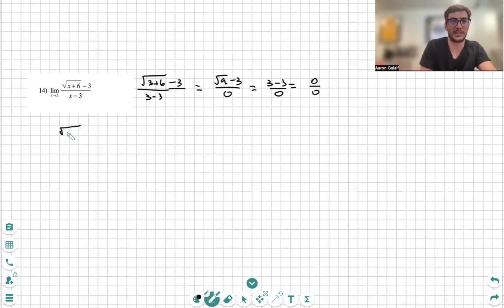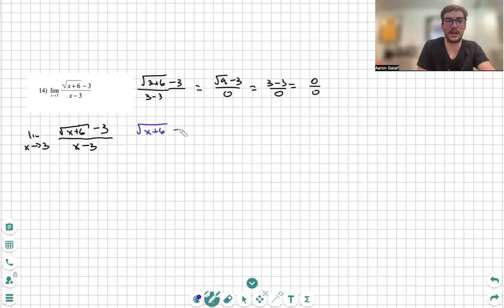First things I can do is we're going to multiply the top and bottom by the conjugate. What do you mean, conjugate, Aaron? Well, the conjugate is going to be the opposite of what you see to create a perfect square on the numerator in order to cancel out my square roots.